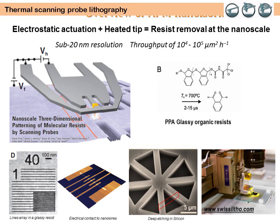In 2010, IBM presented a system to pattern a resist through a specially designed heatable tip. This was conceived in order to overcome the intrinsic limits of SPL, like low throughput and tip wear. The horizontal and vertical motion of the substrate tip can be controlled precisely, allowing sub-20 nm lateral and sub-2 nm vertical resolution, giving the system 3D capabilities.